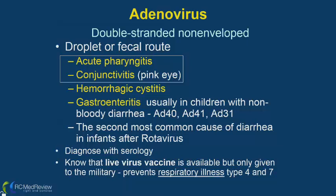Diagnosis is with serology. A live virus vaccine is available but only given to the military to prevent respiratory illness — specifically adenotype 4 and 7. This vaccine is not against adenovirus strains 40, 41, and 31, so it does not protect against diarrhea; it is specifically for respiratory illness in military personnel.